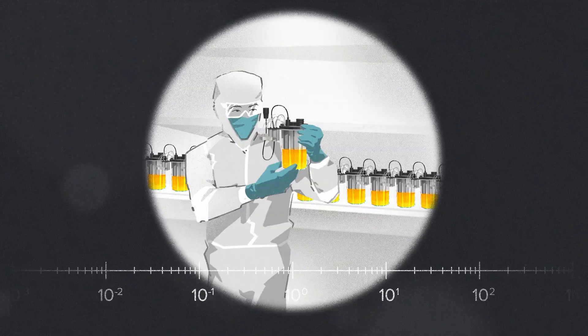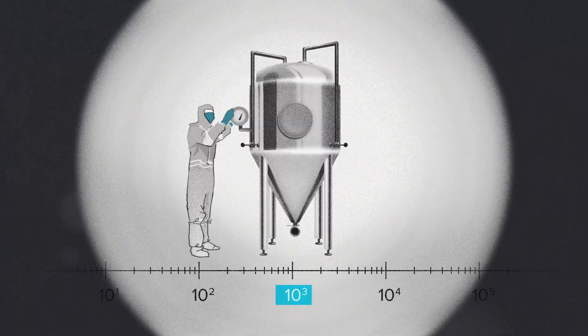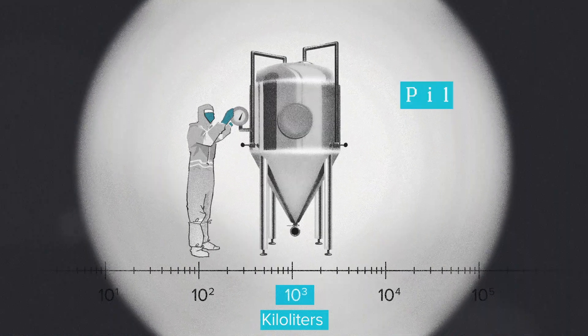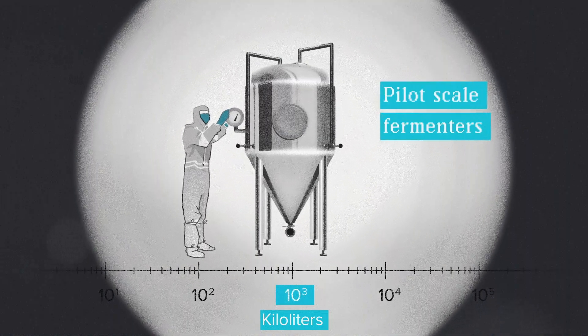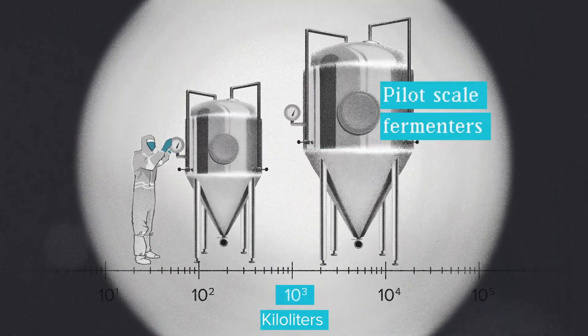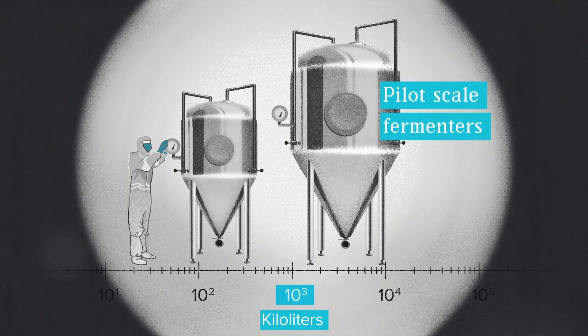Once we've got those parameters locked in, it's time to move the process out of the laboratory and into a more industrial setting. We have pilot scale fermenters with volumes of 30 liters, 300 liters, or 3,000 liters. Bigger than that, we'll tech transfer the process to your facility, to your contract manufacturer, or to a partner that we can recommend.